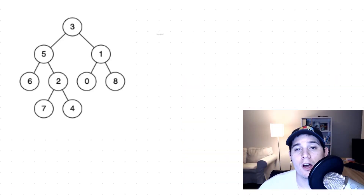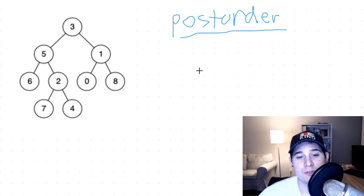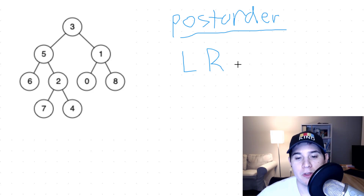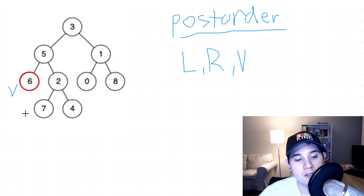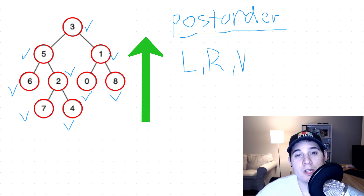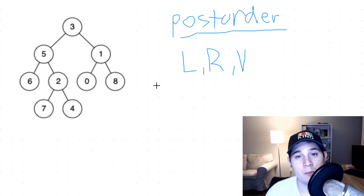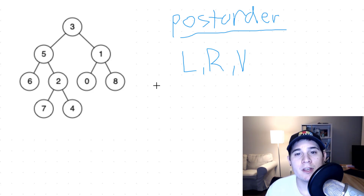To solve this problem we're going to be using a post-order traversal. In a post-order traversal we always visit the child nodes first — we visit left, then right, and then we do something with that node. So the order would be: six, seven, four, two, five, zero, eight, one, three. We're going from the bottom of the tree all the way to the top. The reason this is helpful is because as we visit each node, we can determine if that subtree contains P and Q up to that point.